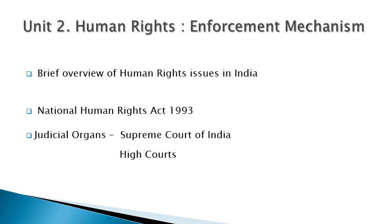When we briefly examine the powers of the Supreme Court and High Courts, it makes clear the significant role played by the judiciary in the promotion and protection of constitutional rights guaranteed to various organs and citizens. The provisions of Articles 32 and 226 confer powers on the judiciary not only to augment the rights guaranteed under the Constitution, but also to inject the philosophical framework of the international law of human rights. The power conferred under these articles is described as judicial review. This covers the brief overview of human rights issues in India, the National Human Rights Act 1993, and the judicial organs — the Supreme Court and High Courts.